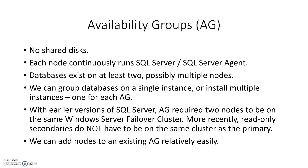What about availability groups? Availability groups have a shared nothing approach, so there is no shared disk. Each node continuously runs SQL Server and SQL Server agent services. Databases exist on at least two, possibly multiple nodes. We can group databases on a single instance or install multiple instances — one for each availability group. For example, if you have three or four databases that all need to failover at the same time, you can put them in a single availability group. Within a single instance of SQL Server, you can have multiple availability groups or just one.